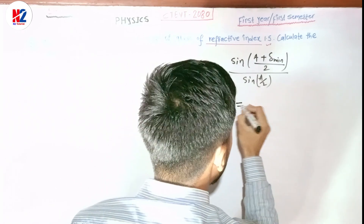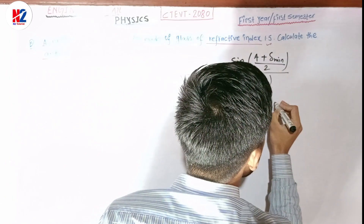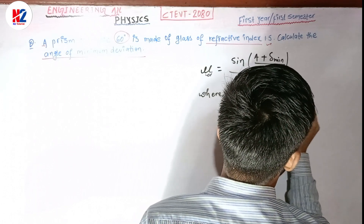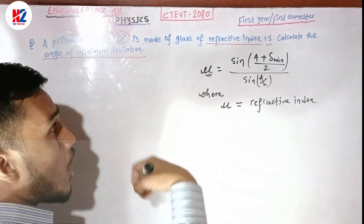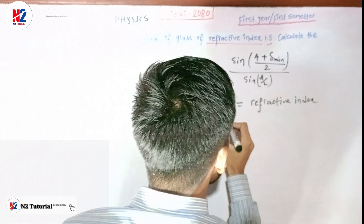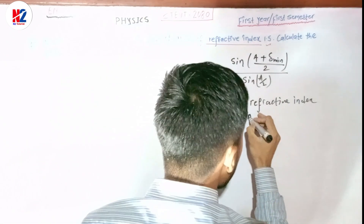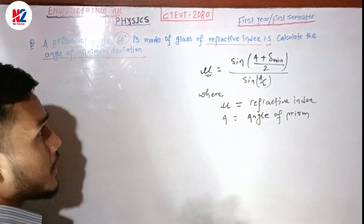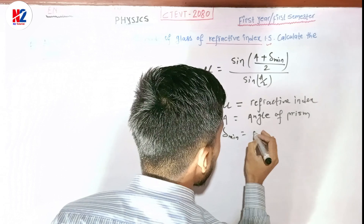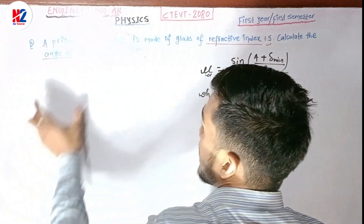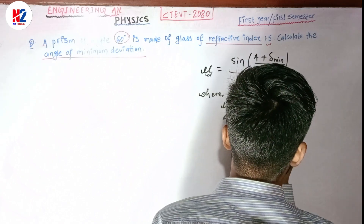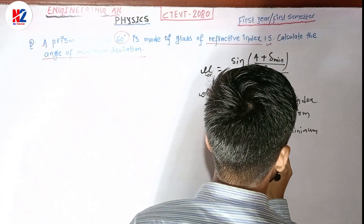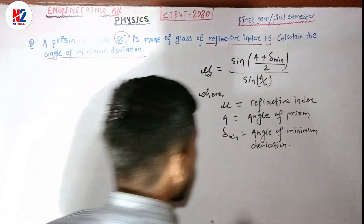μ is the refractive index. The refractive index is denoted by μ. A is the angle of the prism. δ_min is the angle of minimum deviation.